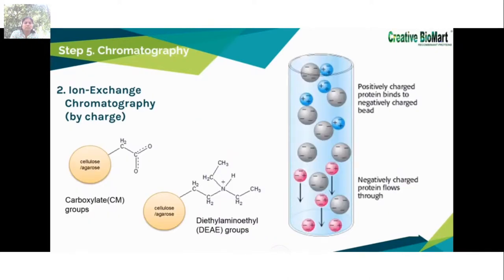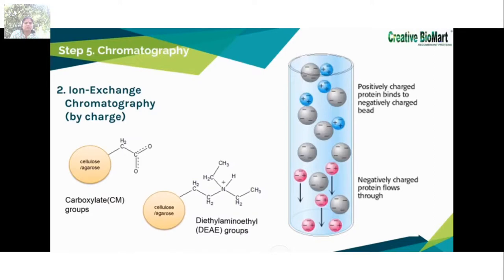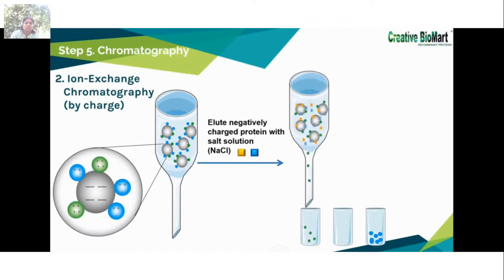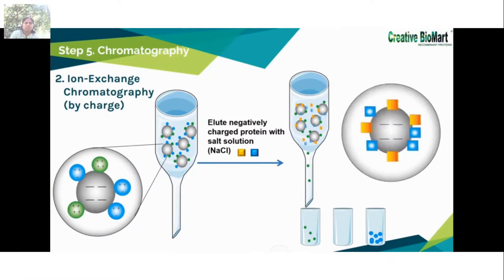In ion exchange chromatography, proteins may have a net positive or negative charge at different pH ranges. If a protein has a net positive charge, it will typically bind to a column containing carboxylate groups, whereas a negatively charged protein will bind to a column containing diethylaminoethyl groups. The bound positively charged proteins can be eluted by increasing the concentration of sodium chloride or another salt, because sodium ions compete with the positively charged groups on the protein for binding to the column. Proteins with less net positive charge are released first, then higher-charge-density proteins. You need to choose suitable chromatography depending on the character of your protein of interest.